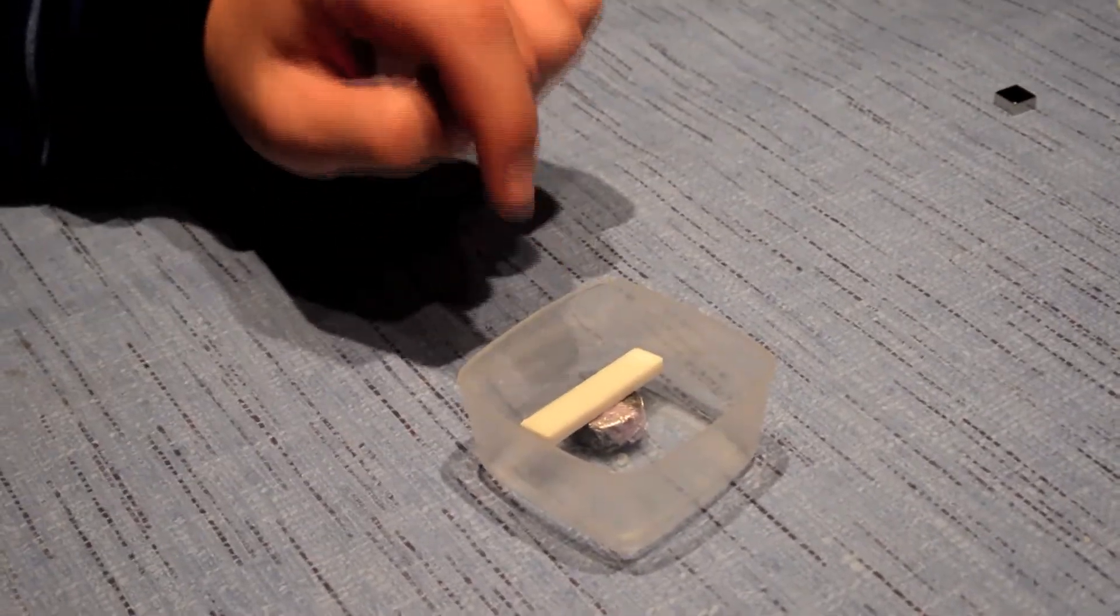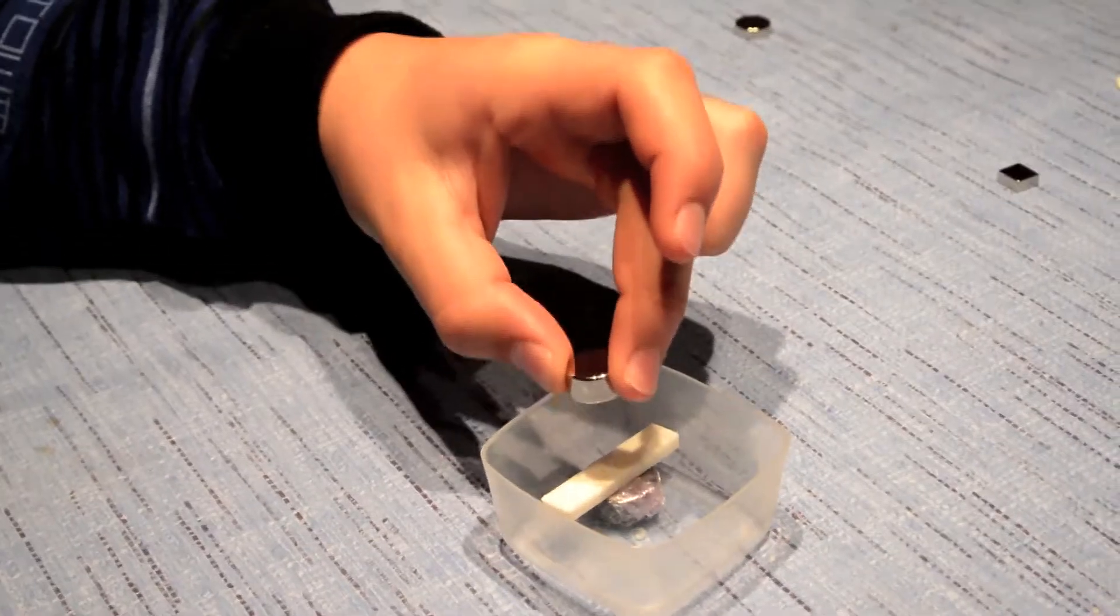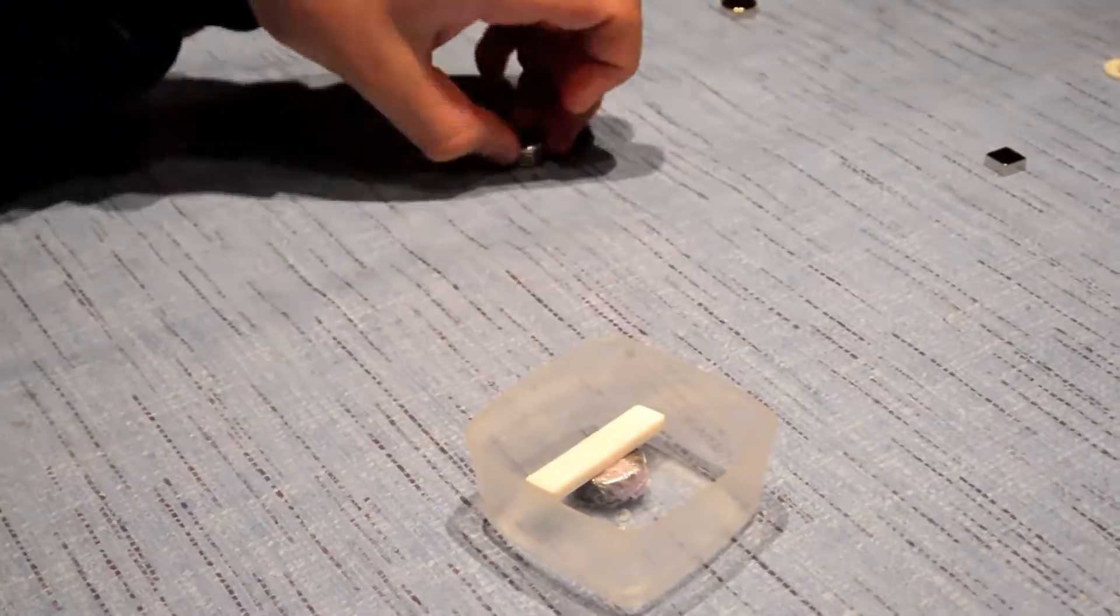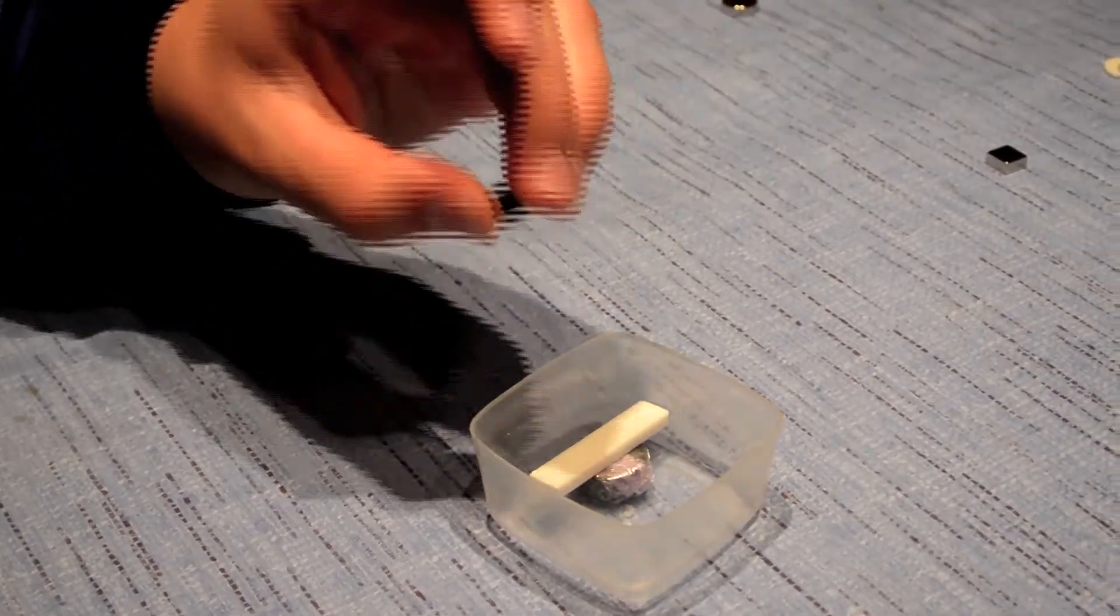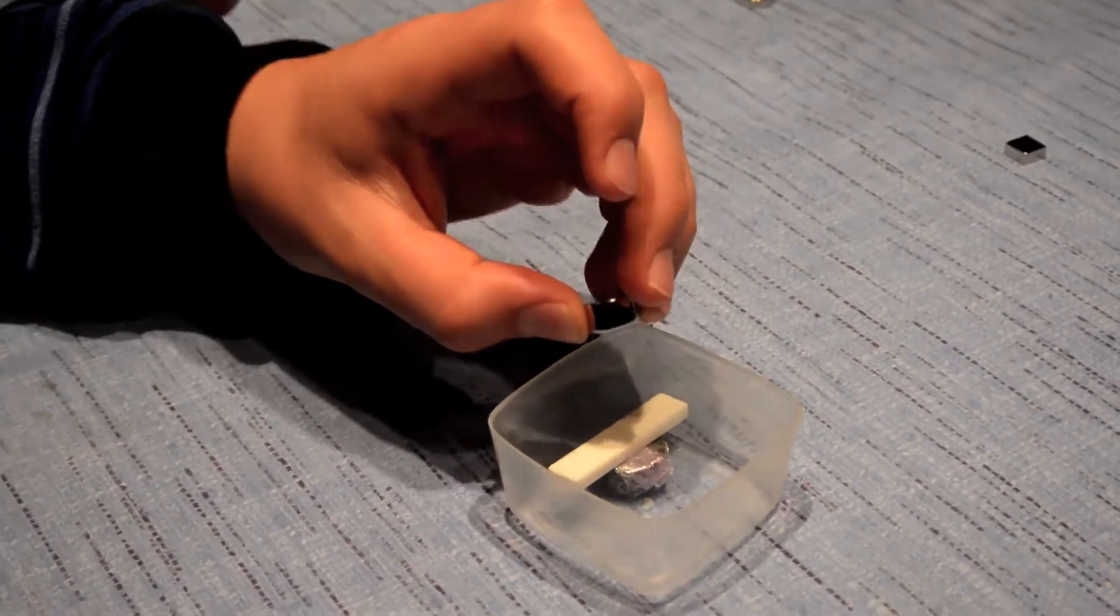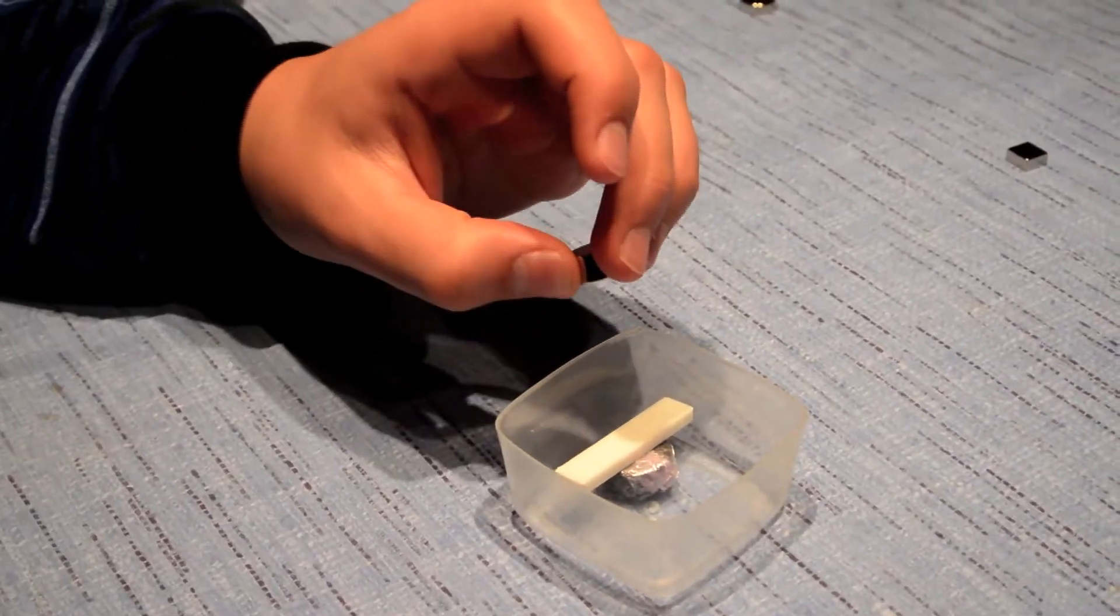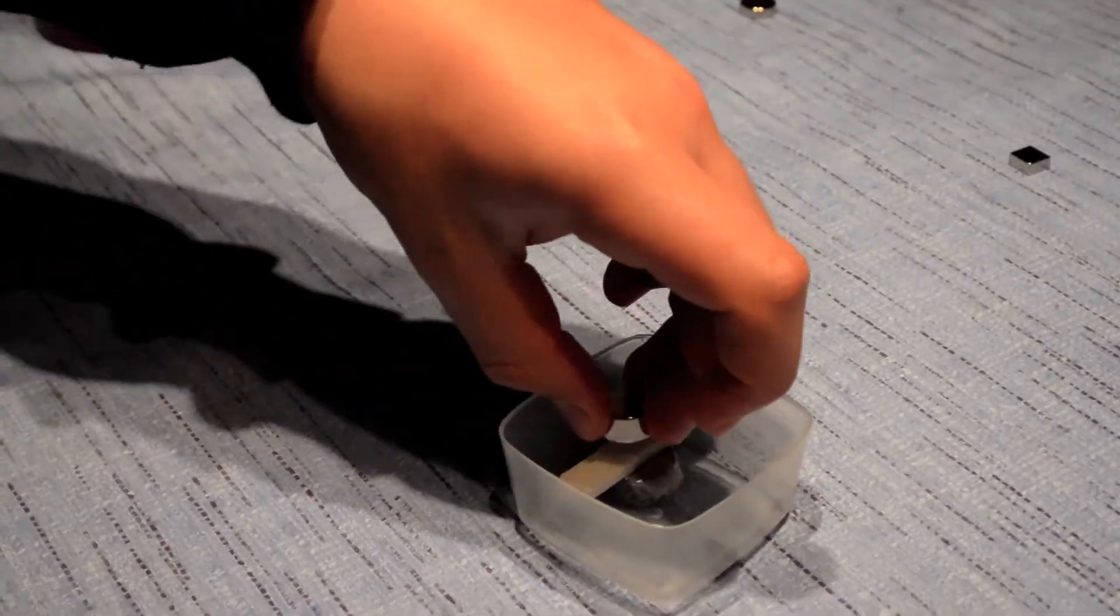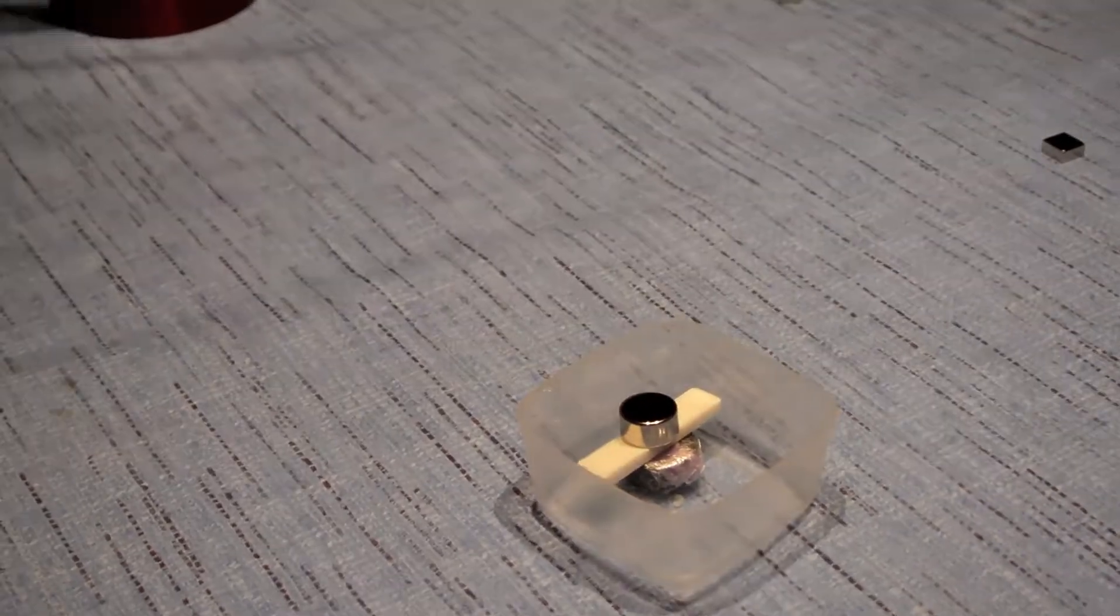I have put a spacer over the superconductor so that the magnet stays pinned at this distance over the superconductor. Because as I said before, the magnet gets locked into a fixed position over the superconductor because its magnetic field is trapped inside the superconductor. Now I will put the magnet over and cool the superconductor down with liquid nitrogen.